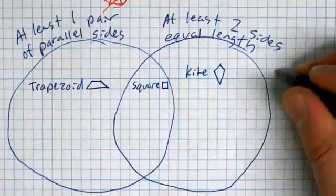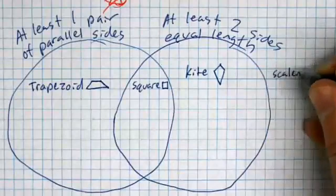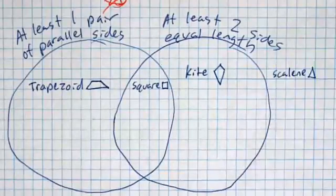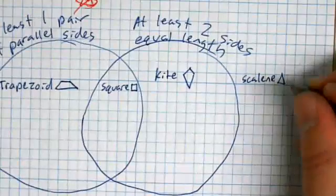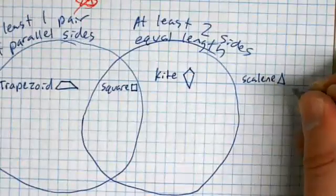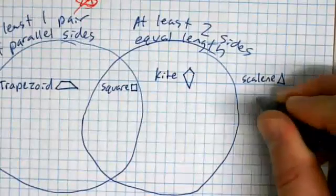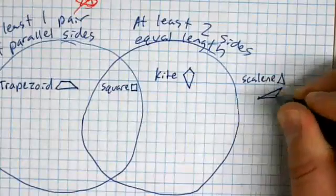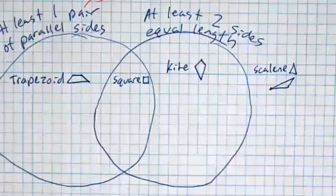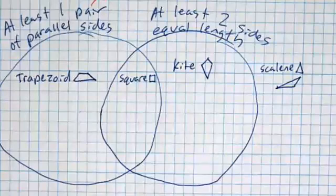Scalene triangle. And I'm okay with you using the symbol for triangle, which is the little triangle. And then draw your scalene triangle. All right, so we've done four. We've got, that means we've got 12 more shapes to fit into this Venn diagram.